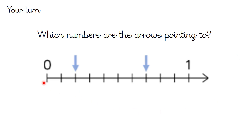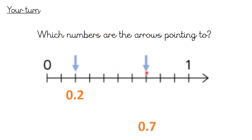We're counting in tenths between zero and one: zero, zero point one, zero point two, zero point three, zero point four, zero point five, zero point six, zero point seven, zero point eight, zero point nine, one. The first arrow is pointing to zero point two, and the second arrow is pointing to zero point seven.